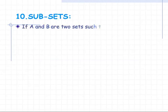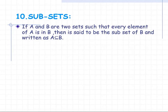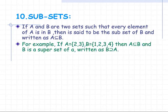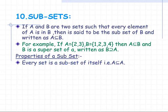Subsets: if A and B are two sets such that every element of A is also in B, then set A is said to be a subset of B, written as A ⊆ B. For example, if A = {2, 3} and B = {1, 2, 3, 4}, then A ⊆ B. Also, B is called the superset of A, written as B ⊇ A.